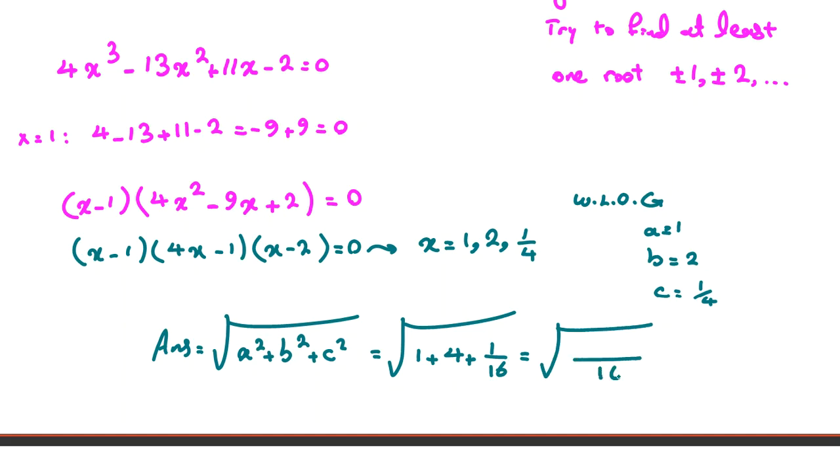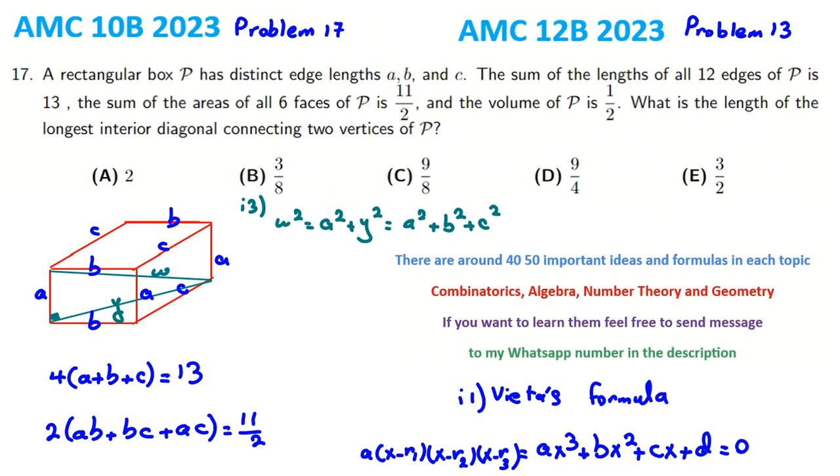Using common denominator 16: 1 + 4 = 5, times 16 = 80, plus 1 = 81. Taking the square root: 81/16 = 9/4. The answer is 9/4.